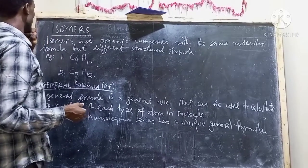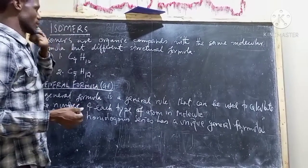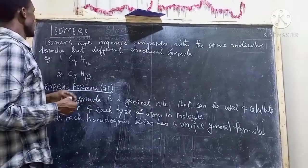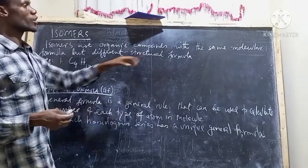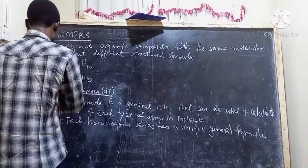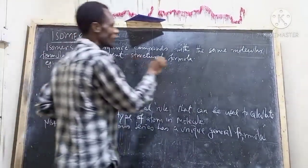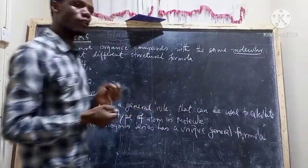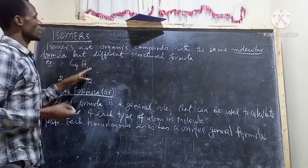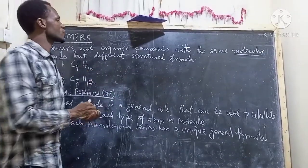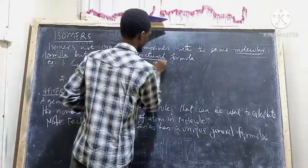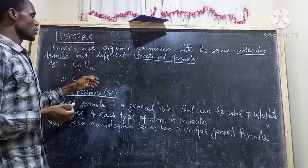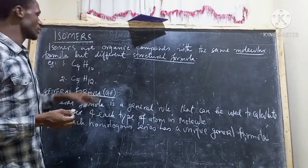The other term we have is isomers. You have to be very careful when talking about isomers. Isomers are organic compounds with the same molecular formula but different structural formula. The molecular formula is the same, but the structural formula is different.